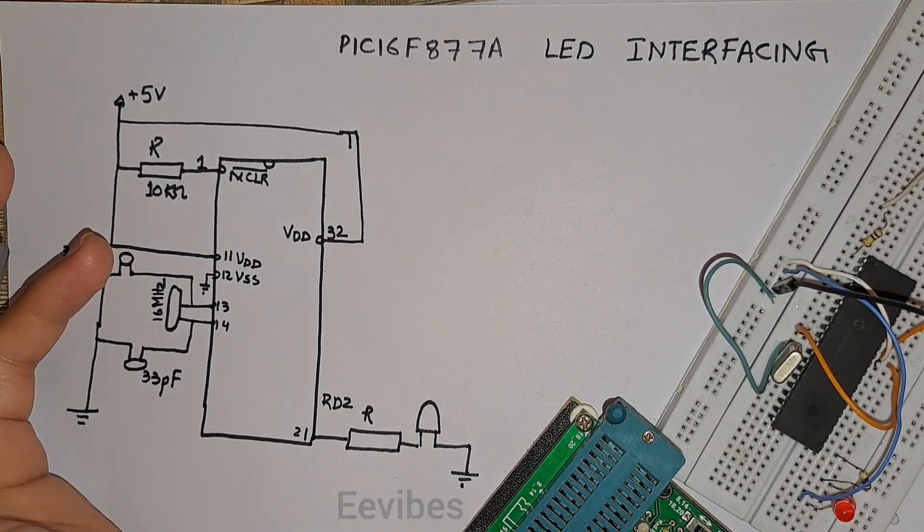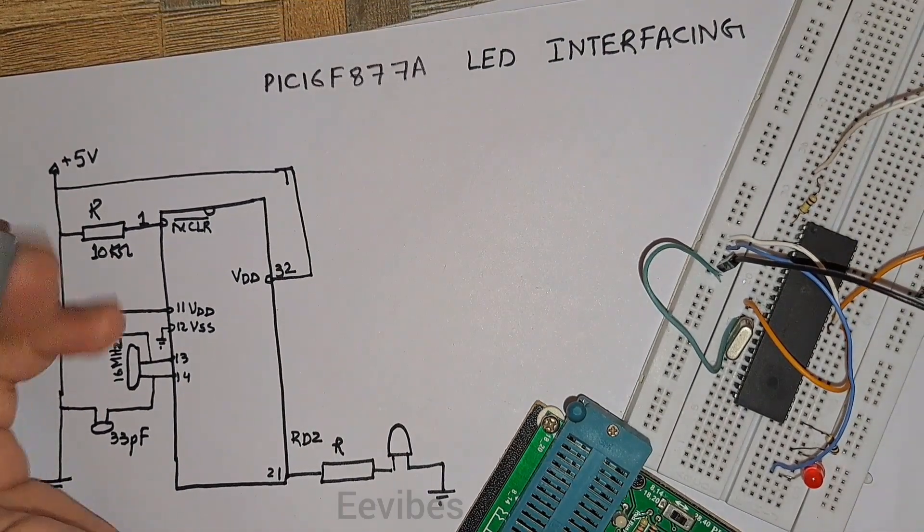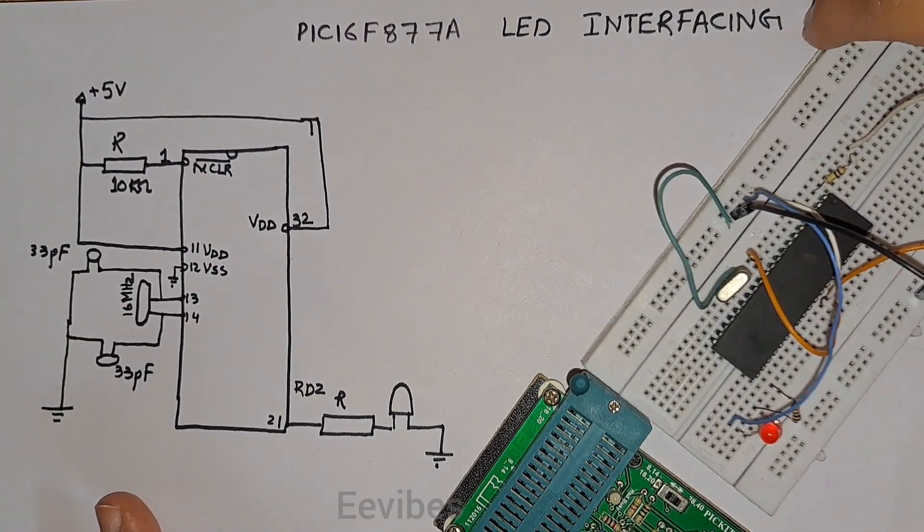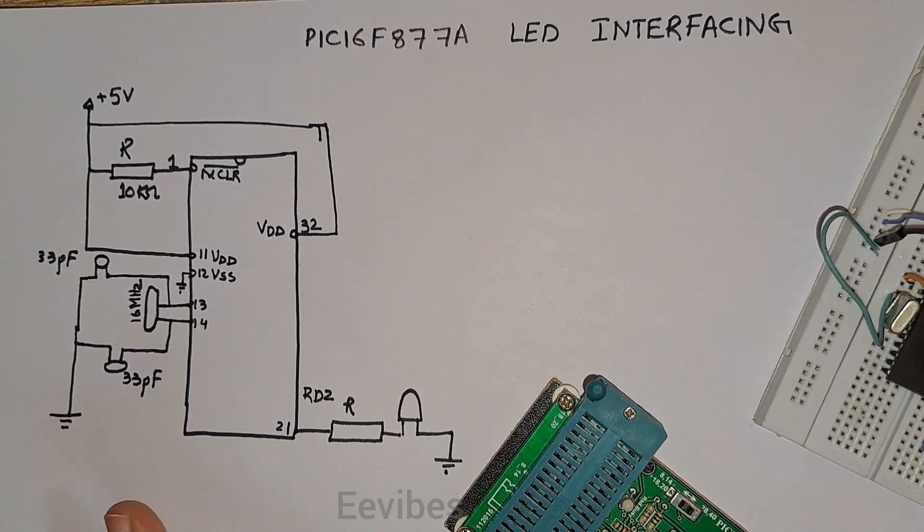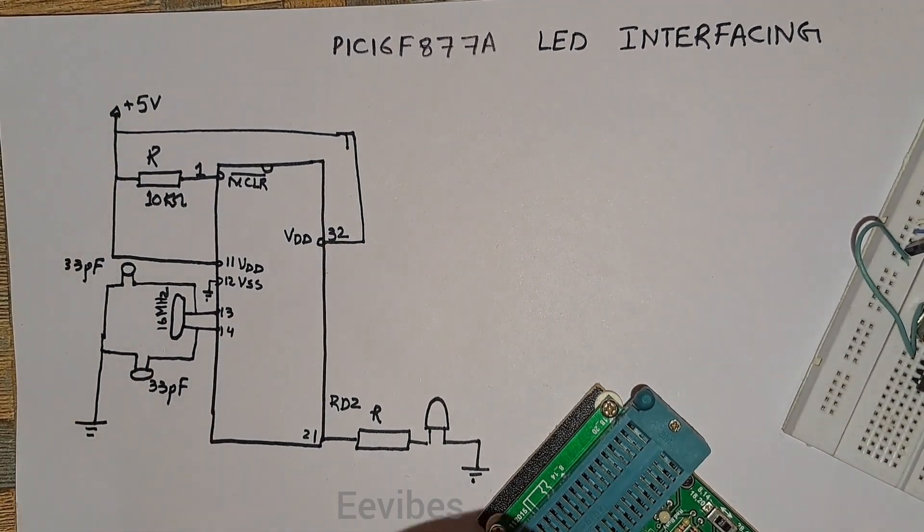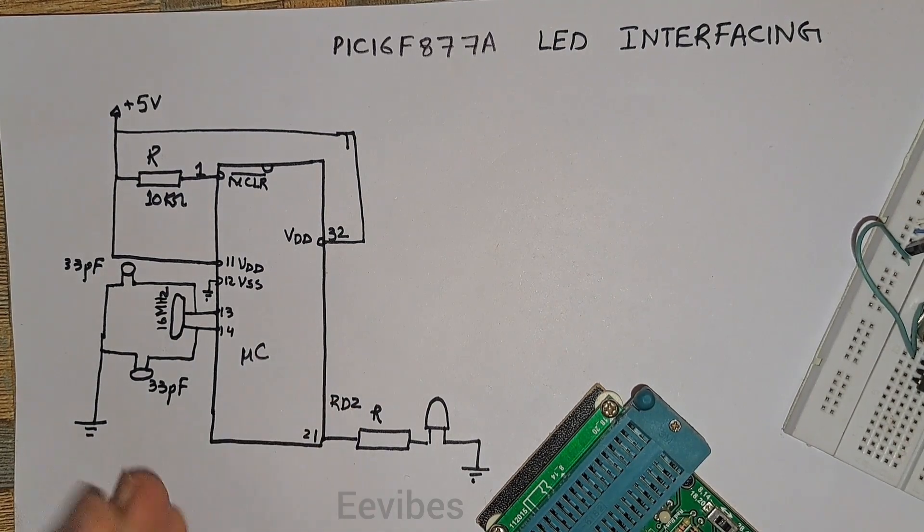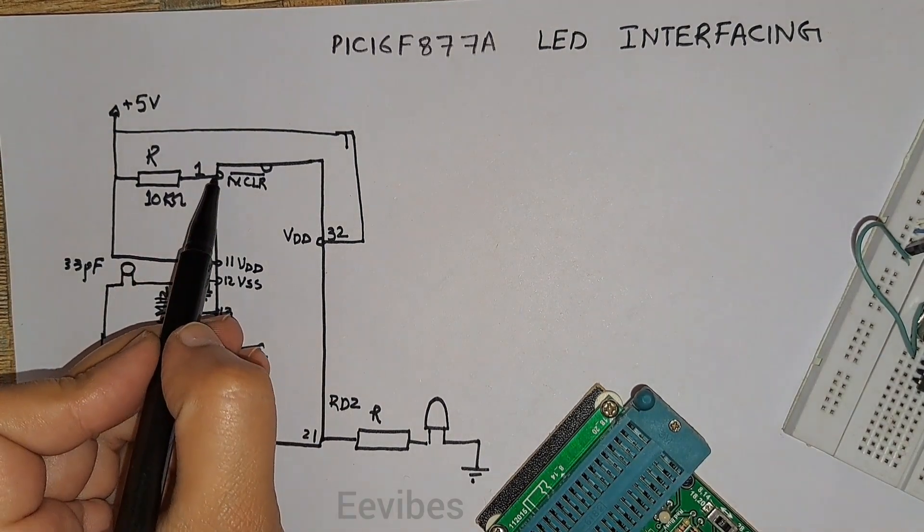I will show you how I have actually connected the circuitry. So looking at that, this is the PIC16F877A microcontroller. Its first pin, which is the master clear pin, is connected with the resistor R and 5 volts.